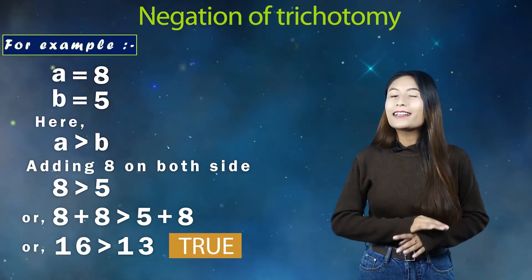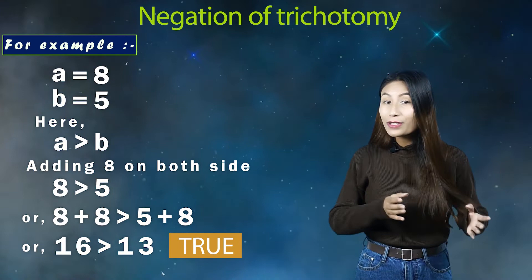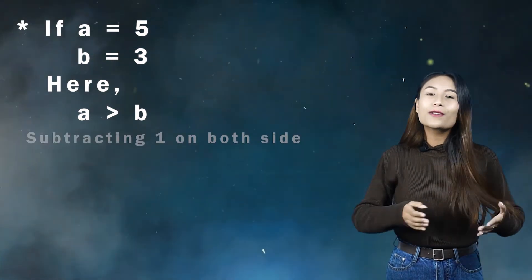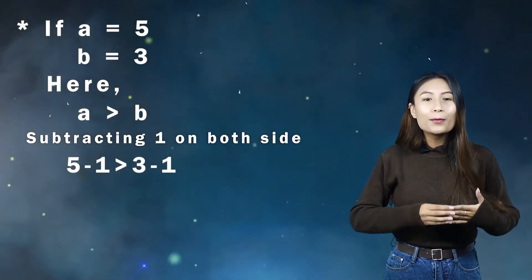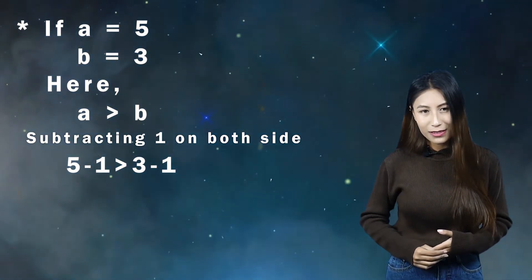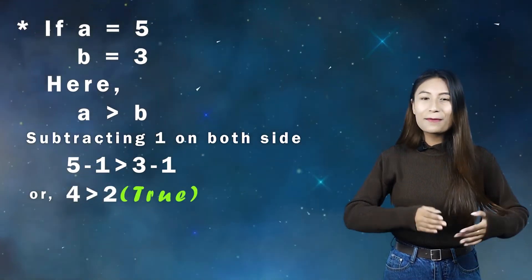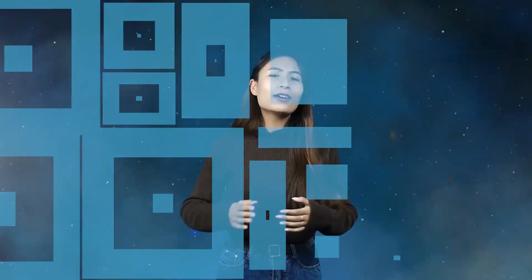You can add any number and the trichotomy symbol doesn't change. Property number two: like addition, you can also subtract the same number from both sides of trichotomy symbols and you will get the same result. There are other rules in trichotomy, but let's not hurry up.